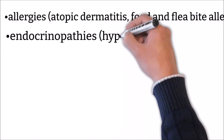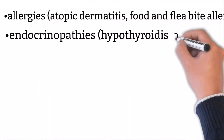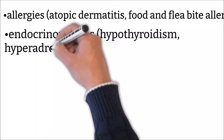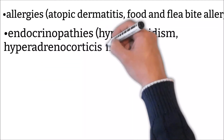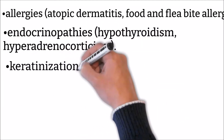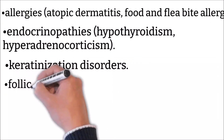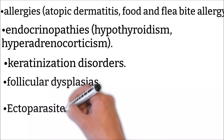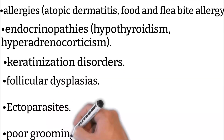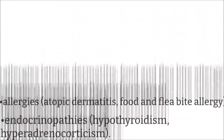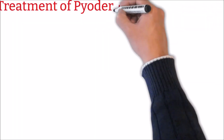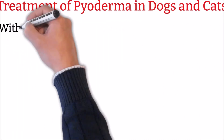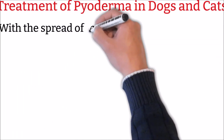Pyodermas are triggered by underlying problems. The most common underlying triggers of superficial pyoderma include: allergies — atopic dermatitis, food allergy, and flea bite allergy; endocrinopathies — hypothyroidism and hyperadrenocorticism; keratinization disorders; follicular dysplasias; ectoparasites; and poor grooming.